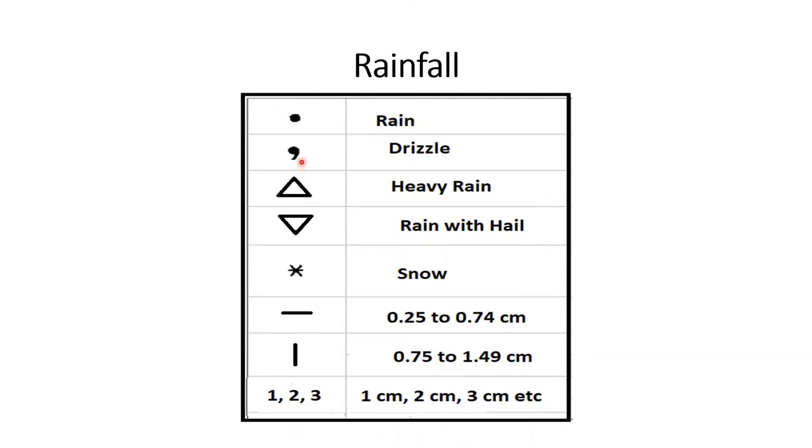Rainfall is shown through different symbol based on its intensity. A point means rain. Comma means drizzle or light shower. Triangle with northward head represents heavy rain while the downward or southward head means rain with hail. Star means snowfall. Horizontal line represents rainfall in between 0.25 to 0.74 cm while in case of vertical line, it is 0.75 to 1.49 cm. Apart from them, rainfall can also be directly written besides a station like 1, 2, 3 which means 1 cm, 2 cm and 3 cm respectively.